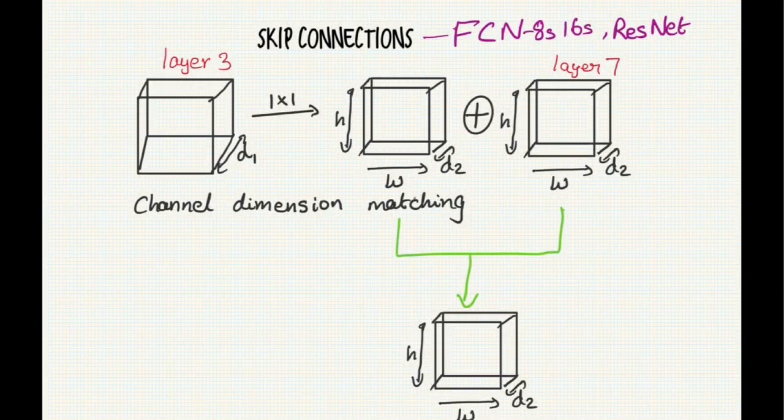Another area where one by one convolutions are used is in case of FCNs and ResNets. Basically it's called skip connections. In skip connections, what happens is a layer in the initial stages kind of adds with a layer in the later stages. So in order to add two tensors, we need to match all the dimensions of the tensors.